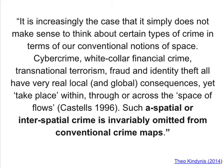So when we map crime, we're actually mapping only a certain dimension of it and leaving out other types, which risks misrepresenting the nature of the issue. Other topics will have the same potential weaknesses. If you are mapping any sort of issue, it's always worth considering: what information is missing, and what events may not have a geographical point or at least one that's recorded?